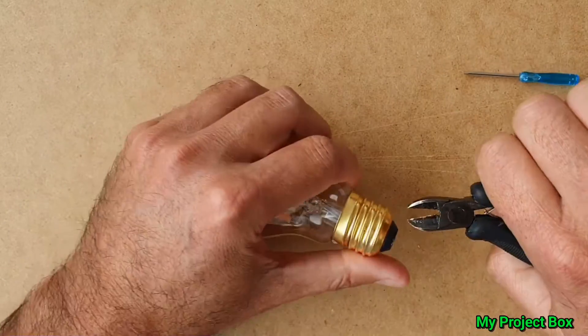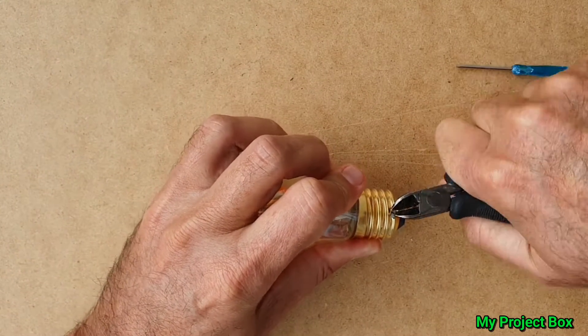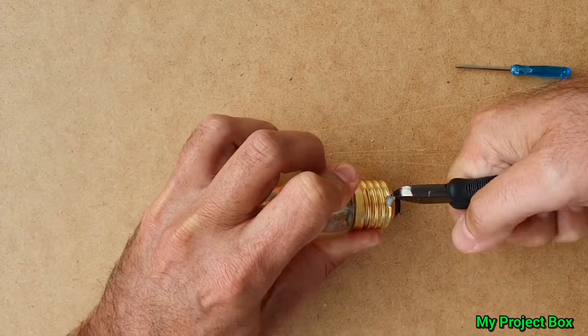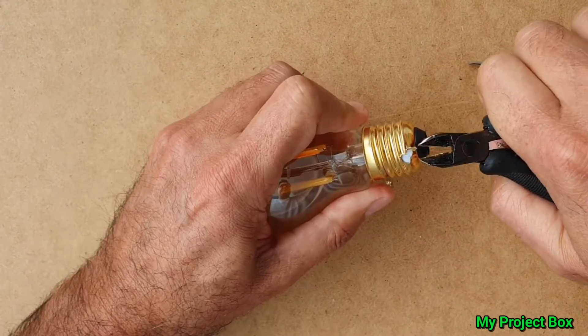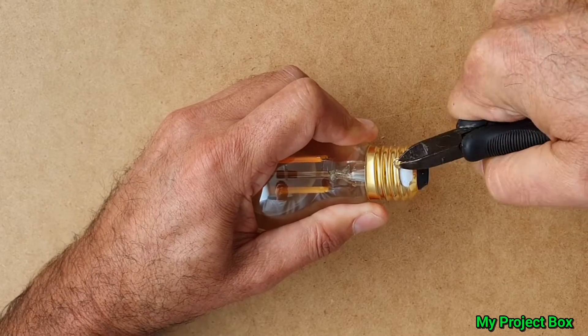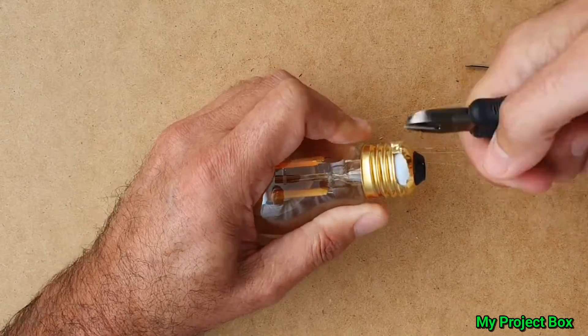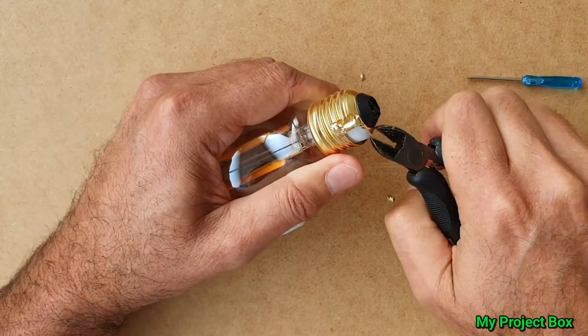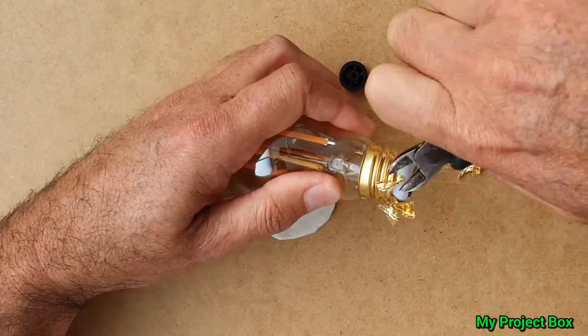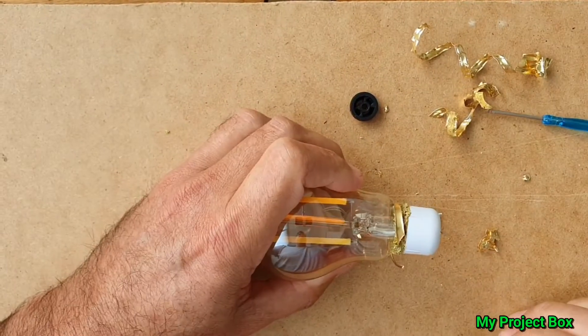So let's see if we can peel this metal back somehow. If we can sort of nibble into it, maybe we can just peel it back. Looks like it's brass but it's not. I think it's either aluminum or steel. Well, it might be brass. Careful not to liberate any blood from my fingers.